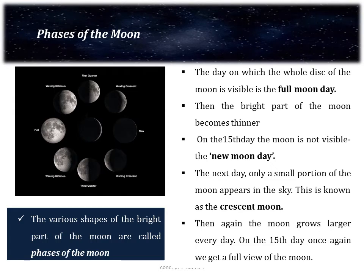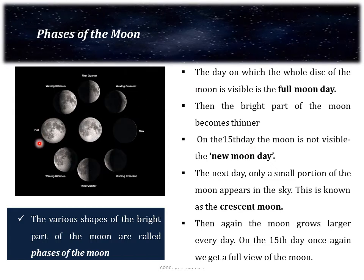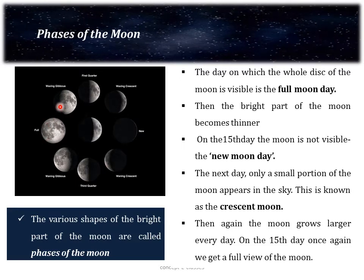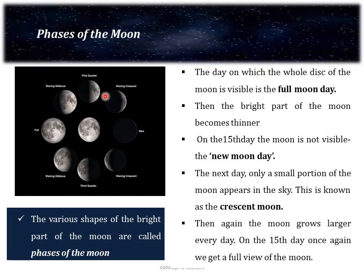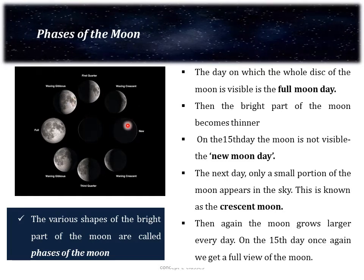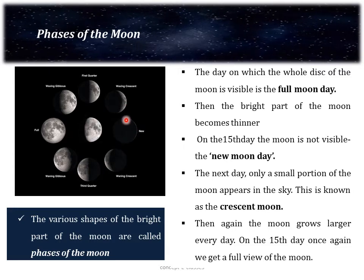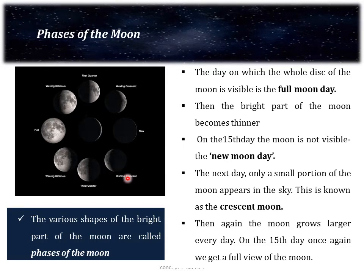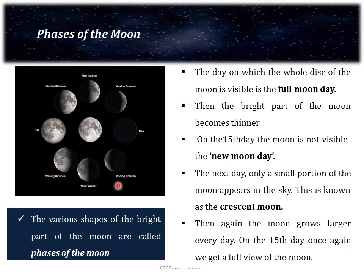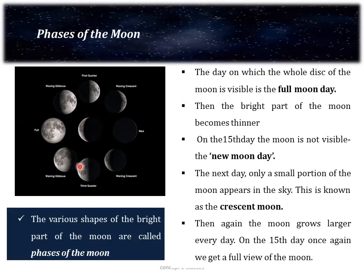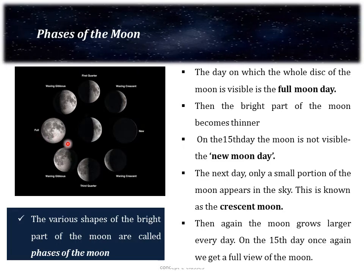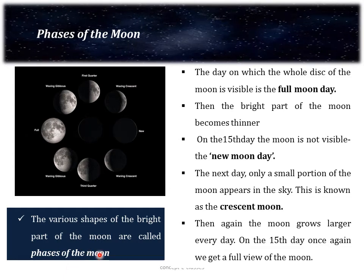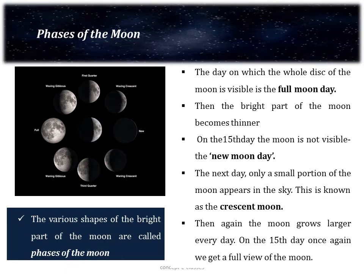The day on which the whole disk of the moon is visible is known as the full moon day. Thereafter every night, the bright part of the moon becomes thinner and thinner, and on the 15th day the moon is not visible — this day is known as the new moon day. The next day, only a small portion of the moon appears, known as a crescent moon. Then again the moon grows larger every day, and on the 15th day we once again get a full view. The various shapes of the bright part of the moon as seen during a month are called the phases of the moon.